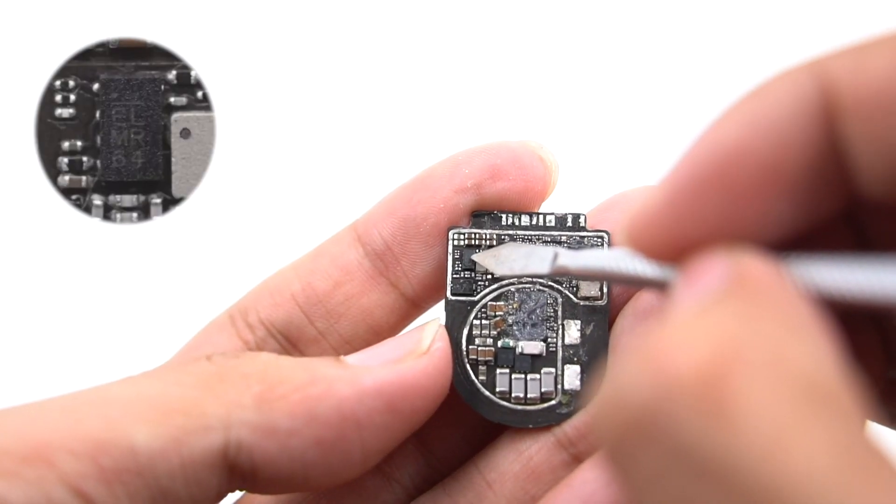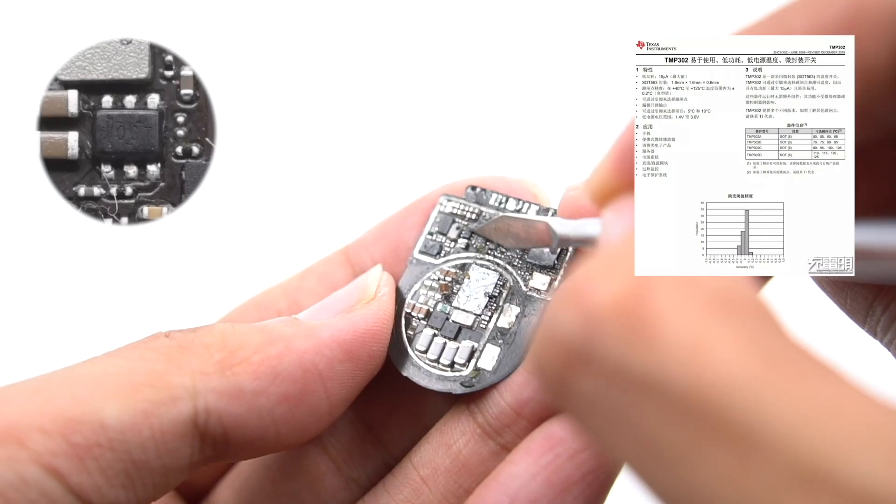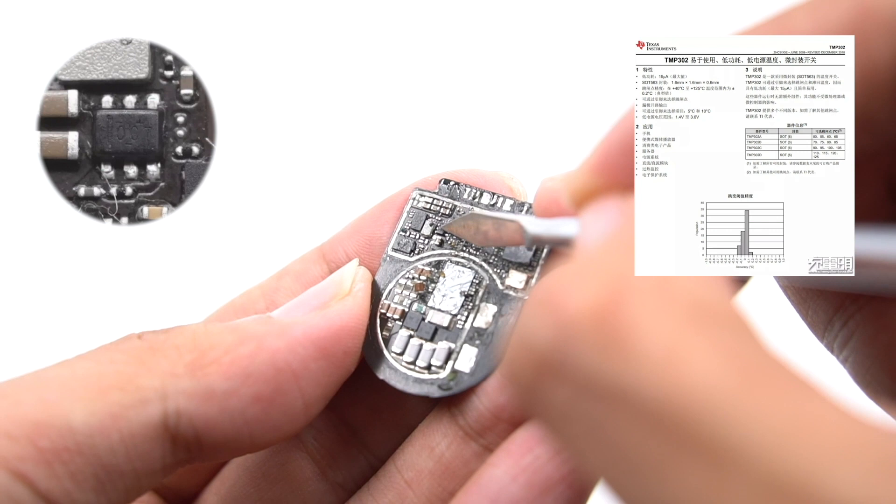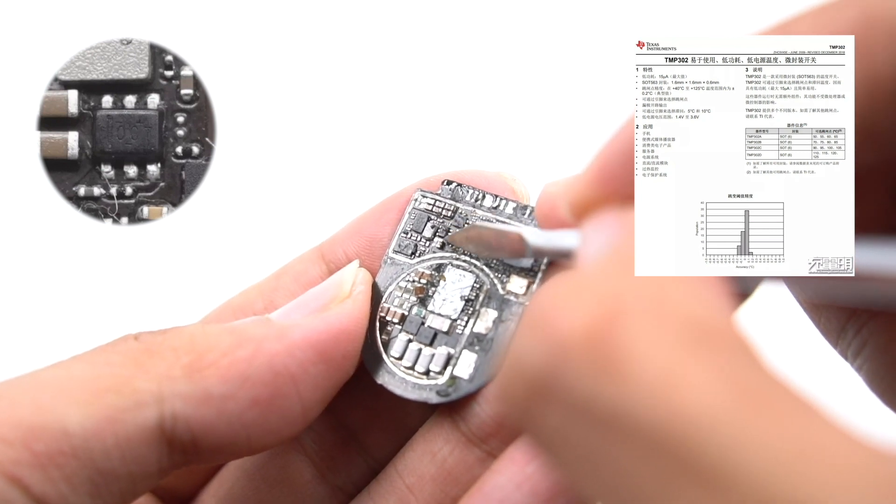Here is the MPS step-down chip which is used to power the microcontroller. This is temperature detection chip which comes from Texas Instruments TMP302. It can be used for temperature detection and overheating protection.